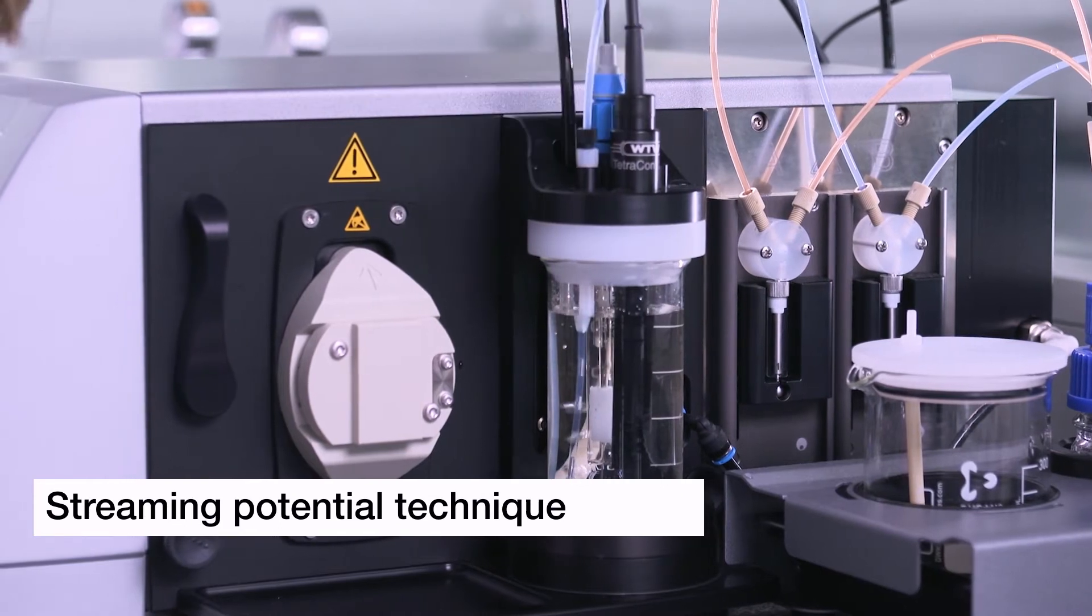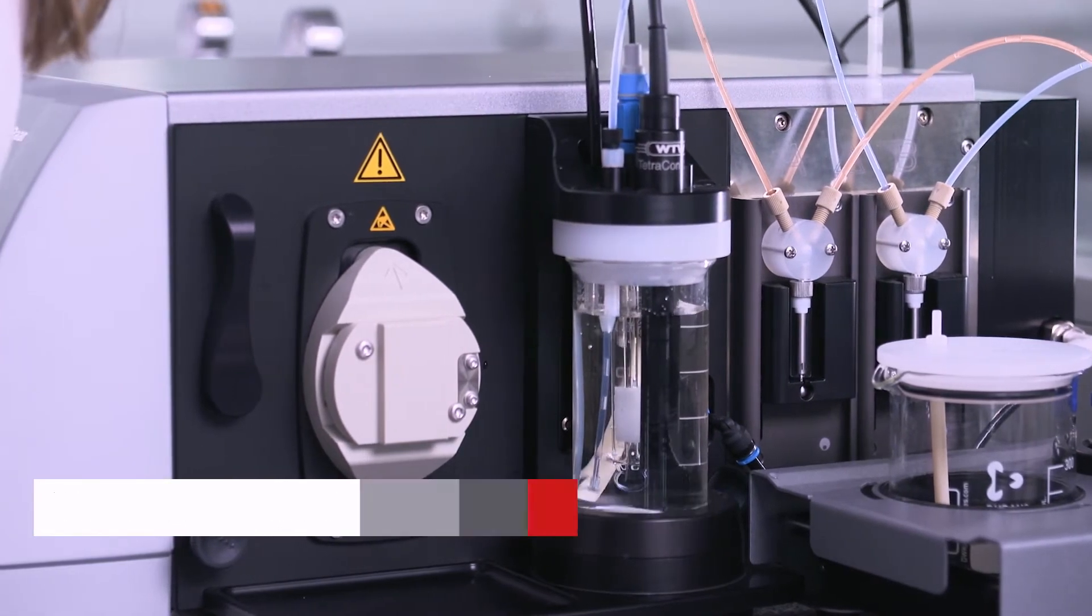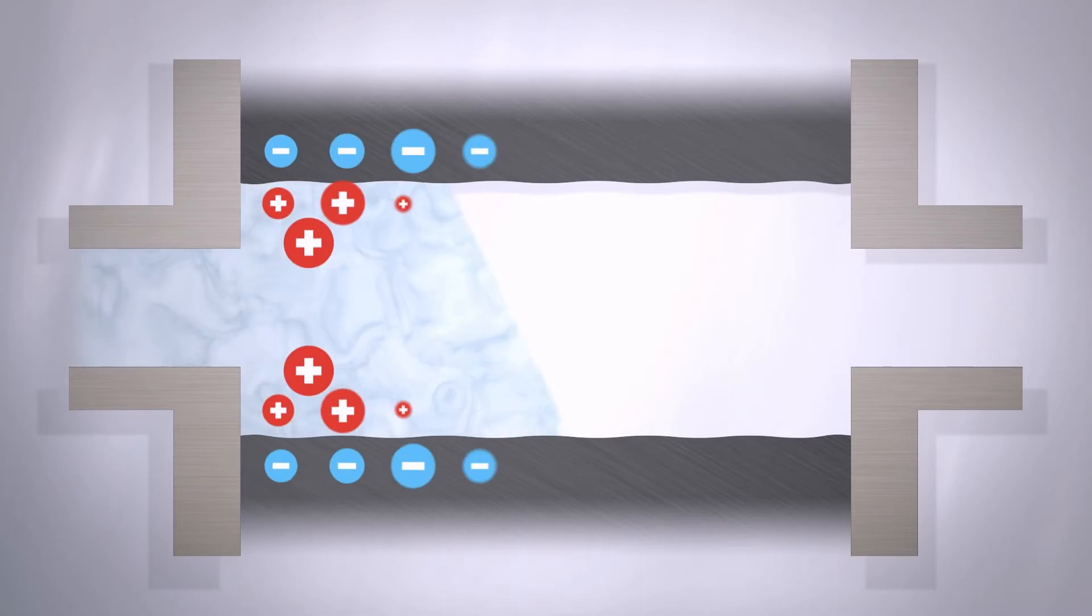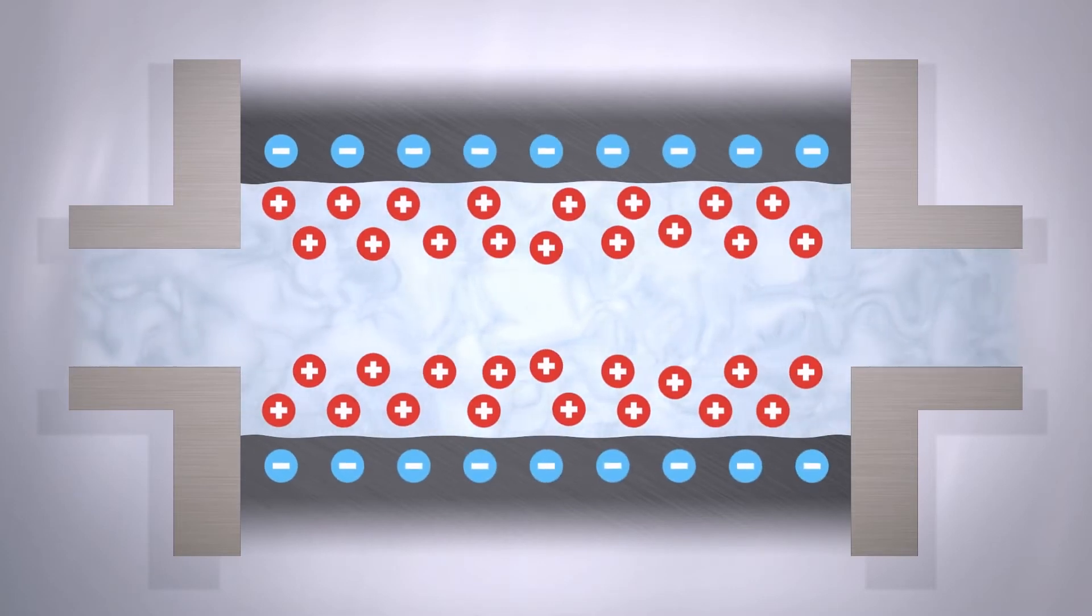The streaming potential technique is used for the zeta potential analysis of macroscopic solids. To do this, the sample is mounted on a suitable measuring cell so that a capillary channel is created. Once the solid surface is in contact with an aqueous electrolyte solution, charges are formed due to acid or base interactions.